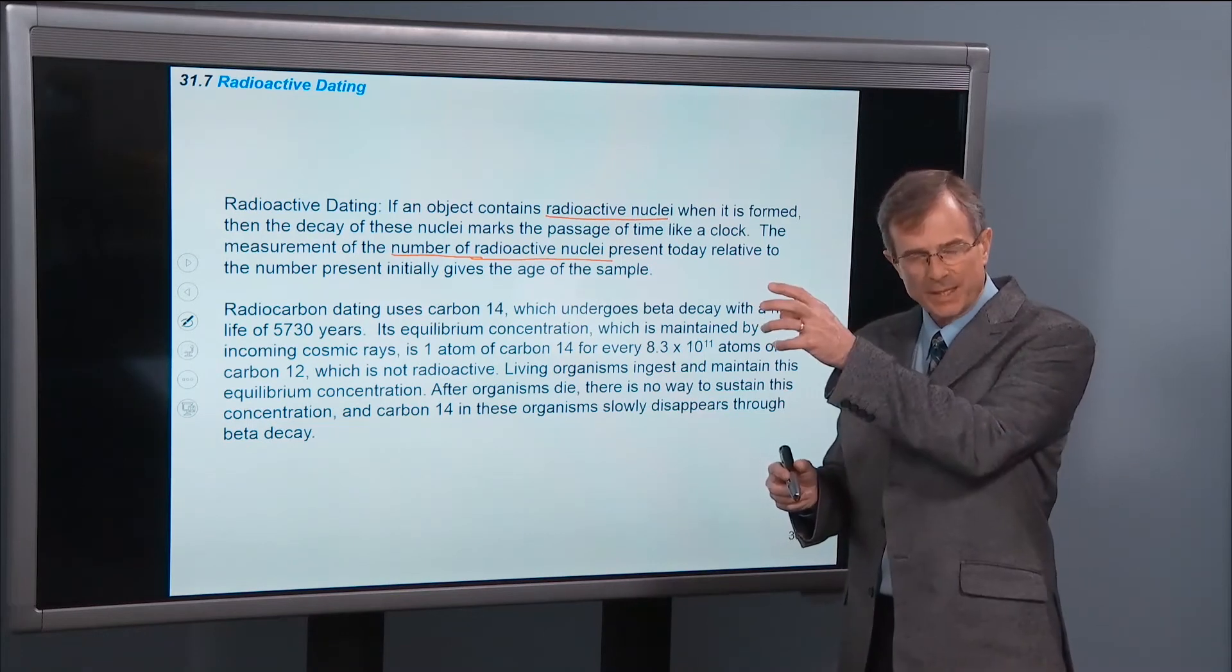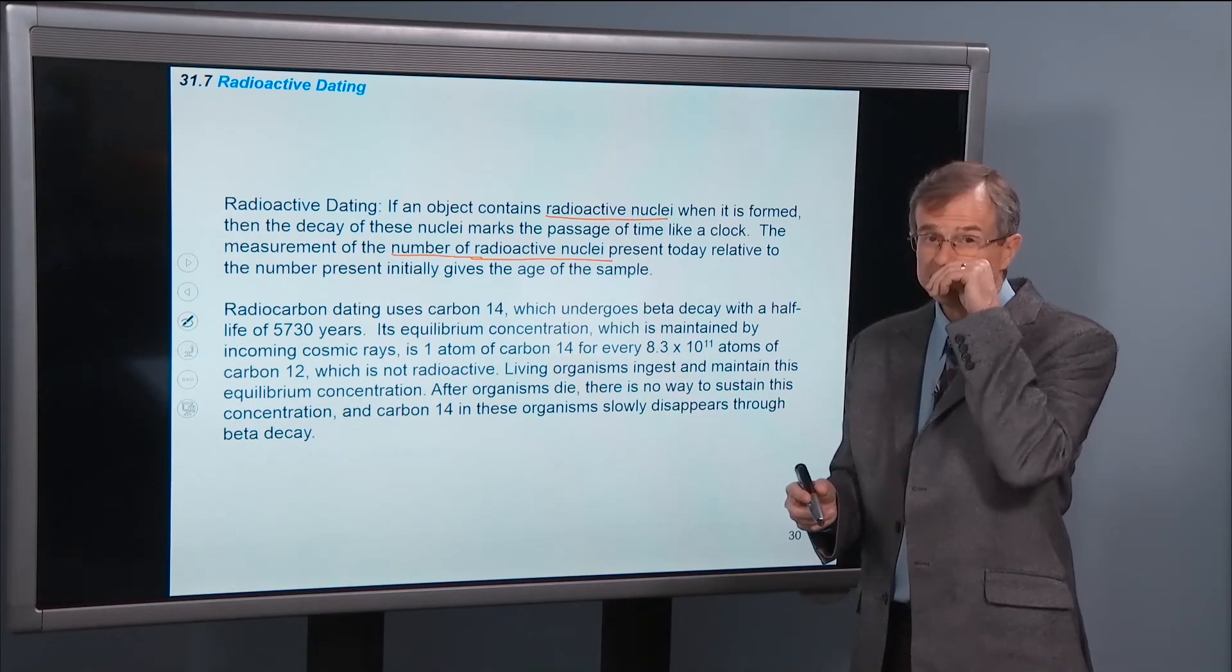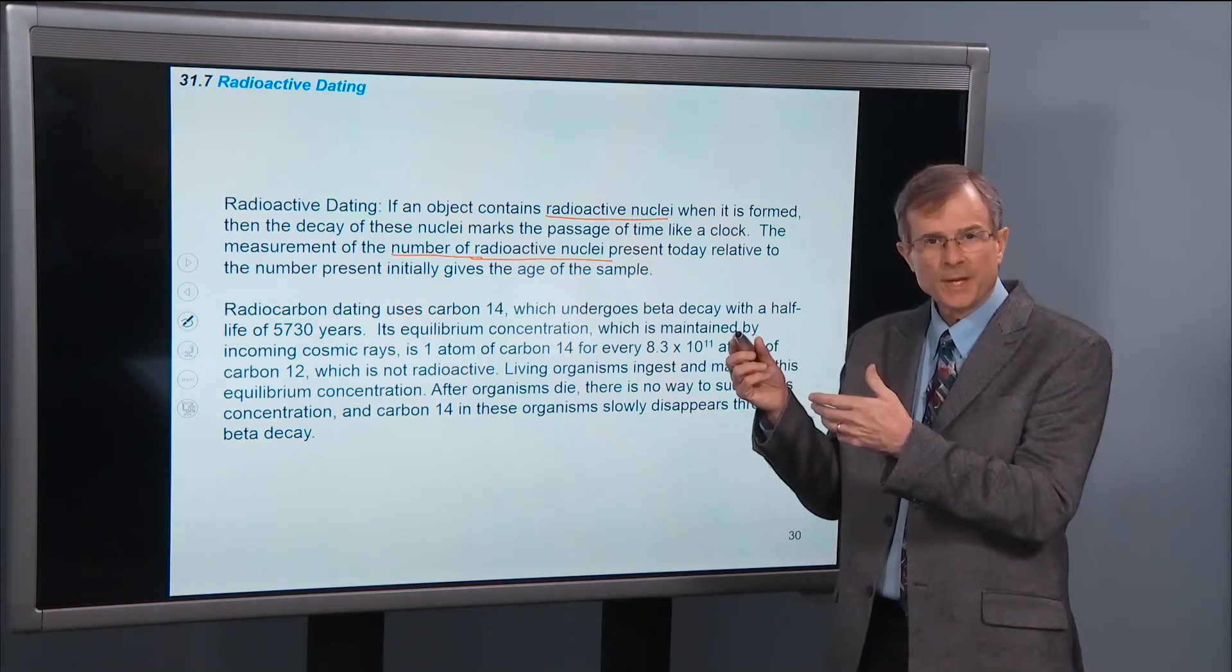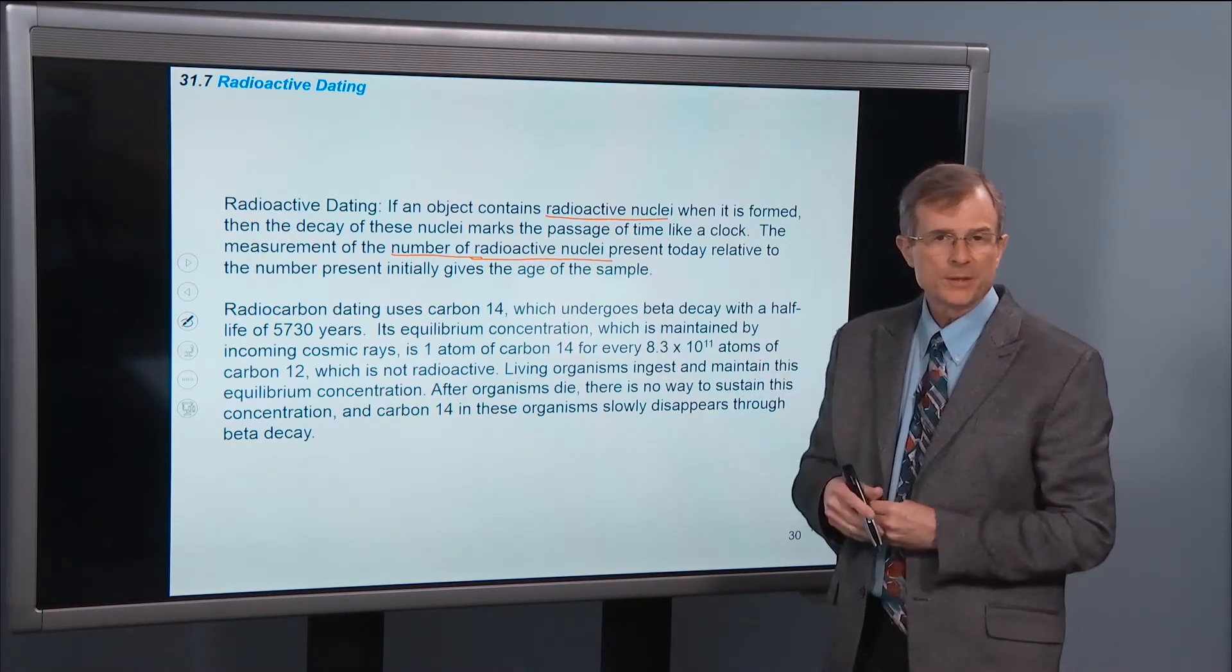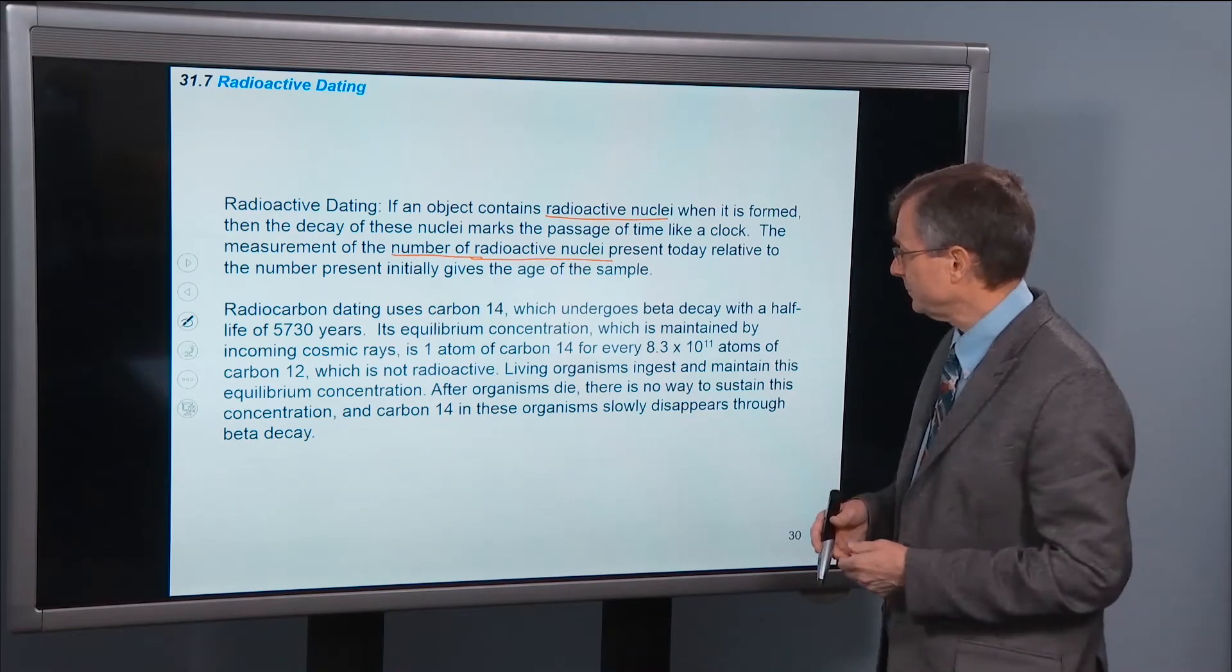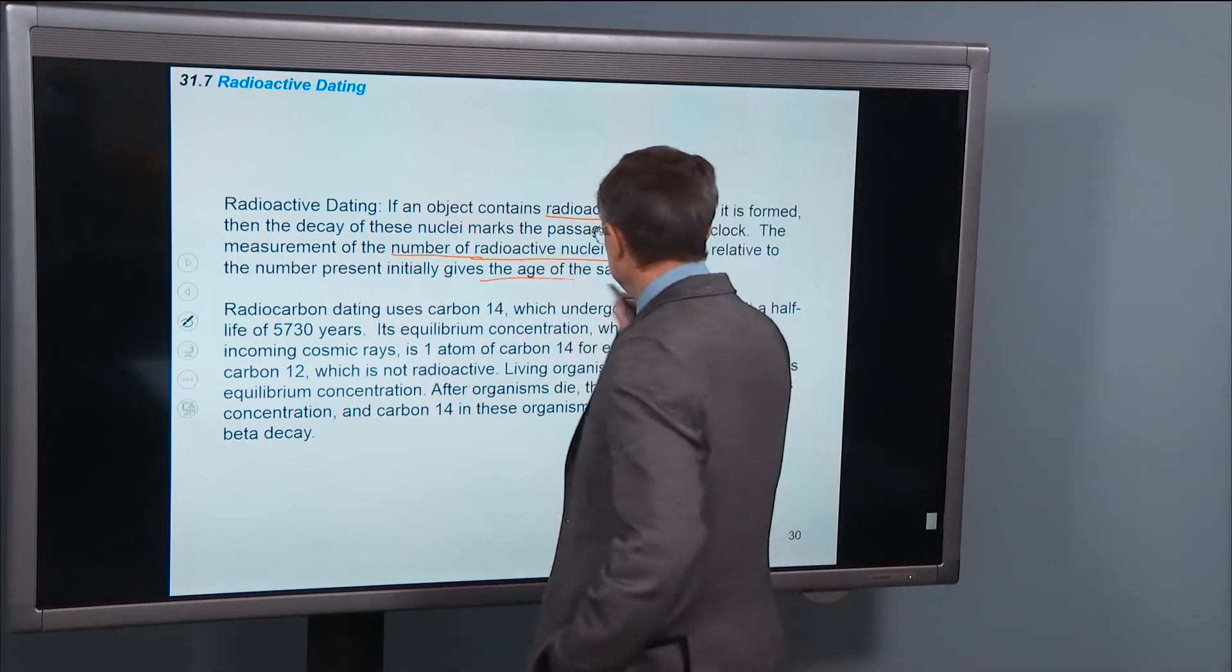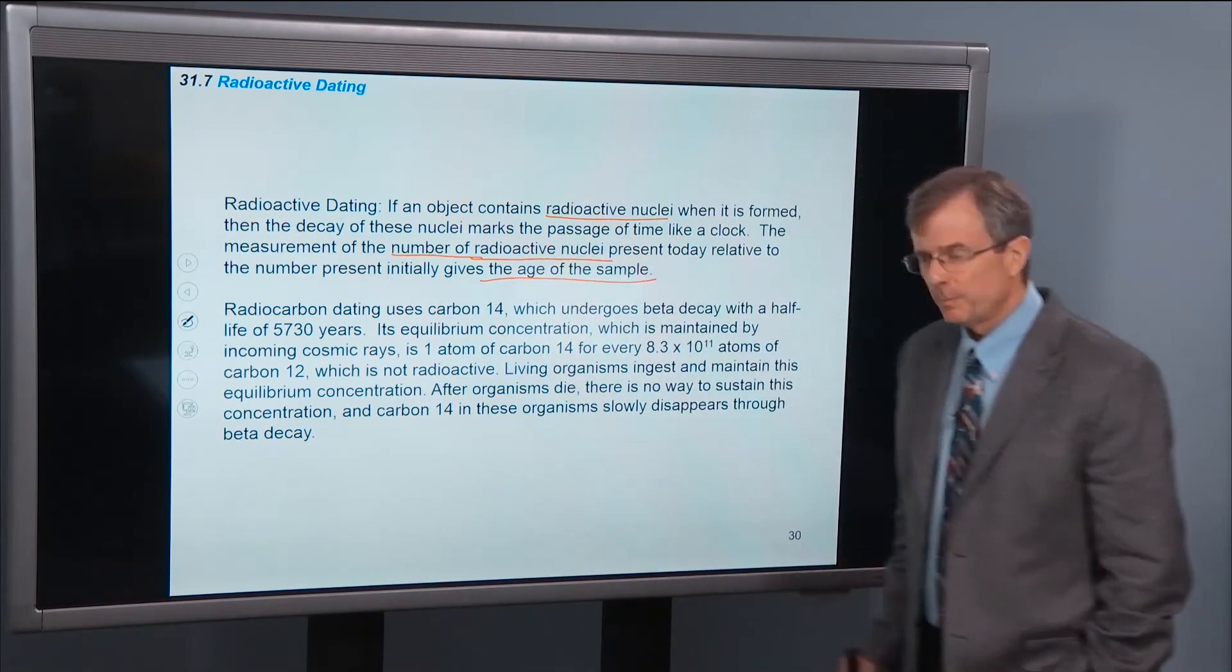Because we've got N equals N0 e to the minus lambda t. If we've got the half-life that gives us lambda, then the only thing left in there is to solve for t. And that gives you the age of the sample. Very simple process.